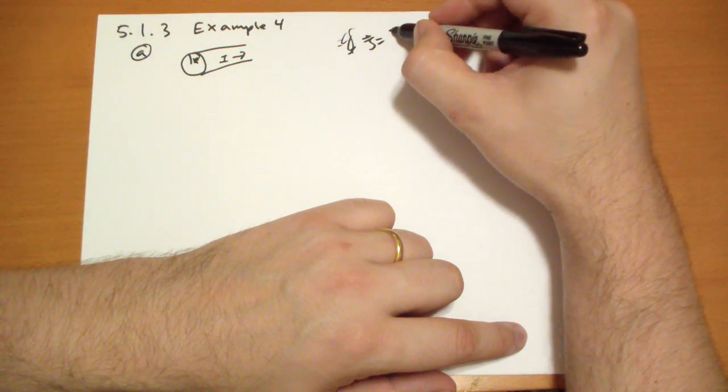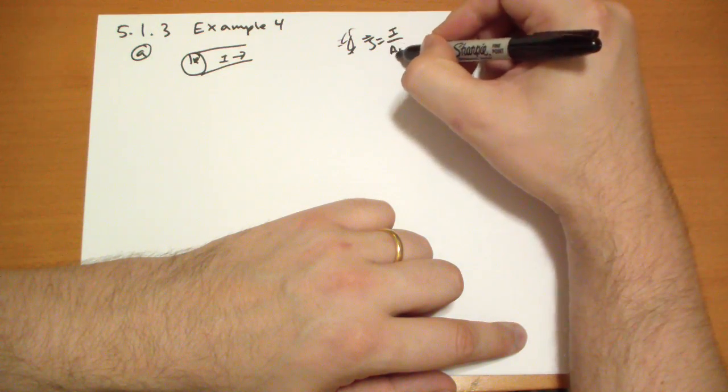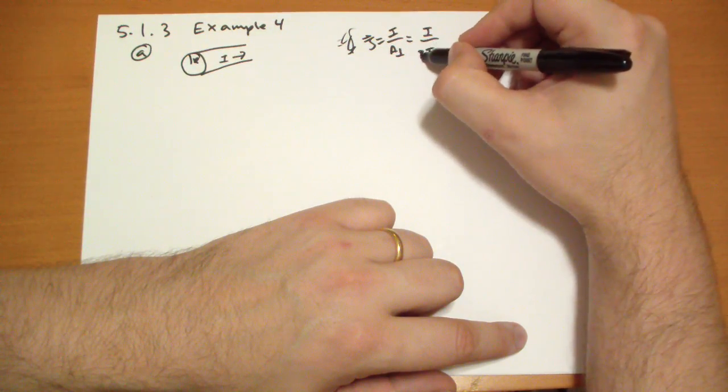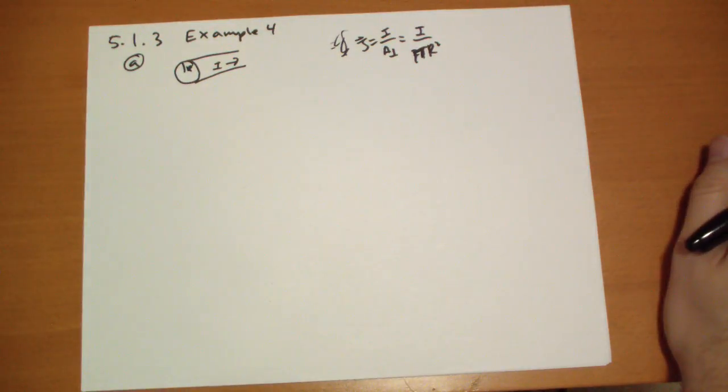the current flowing times the area perpendicular, right? And the area perpendicular is just I over pi R squared. And that is a little bit of a mess, but that's the answer.